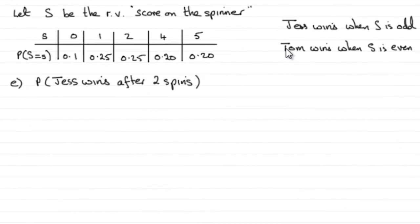Now for Part E, we're told that we've got these two people, Jess and Tom. Jess wins when the spinner is an odd number and Tom wins when it's an even number. For Part E, we've got to work out the probability that Jess wins after two spins.